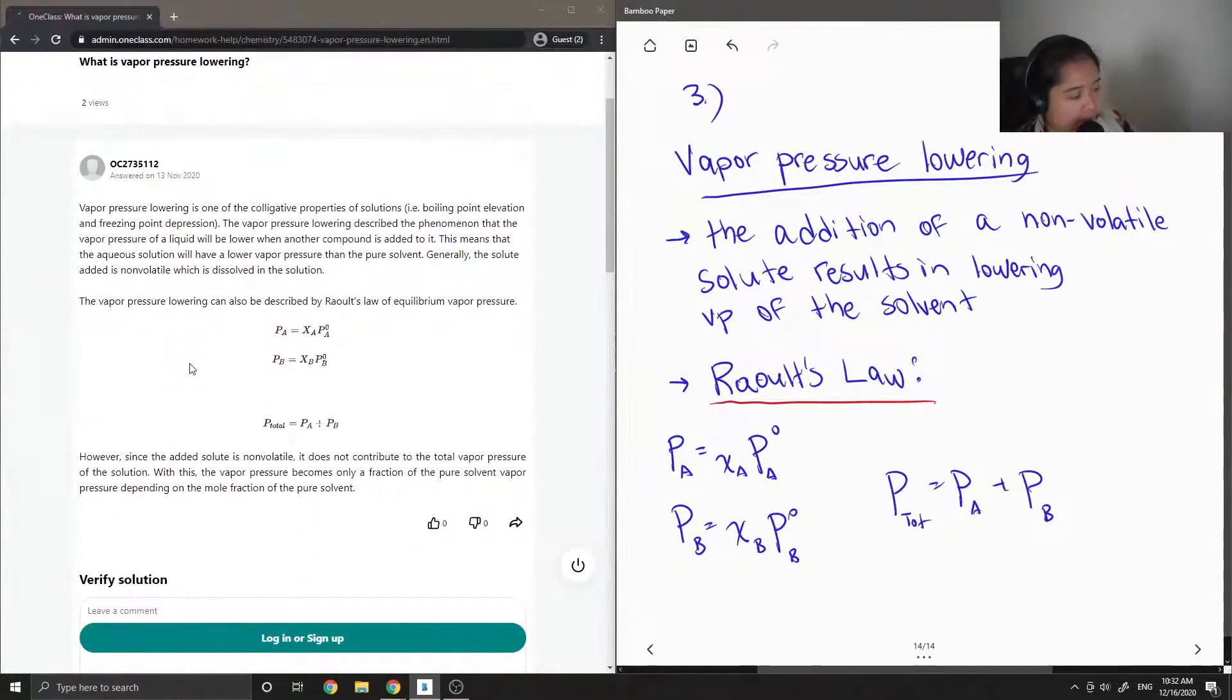Okay, so let's see what the junior tutor said. Vapor pressure lowering is one of the colligative properties of solutions, for example, boiling point elevation and freezing point depression. The vapor pressure lowering described the phenomenon that the vapor pressure of a liquid will be lower when another compound is added to it. This means that the aqueous solution will have a lower vapor pressure than just the pure solvent.